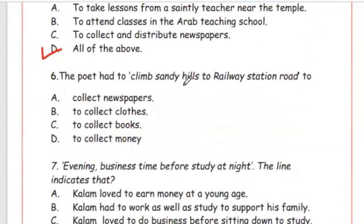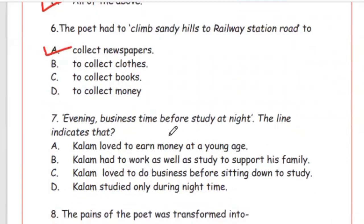Question 6: The poet had to climb sandy hills to the railway station road. Why? Options: to collect newspapers, laws, books, or money. The right answer is Option A, to collect newspapers. Question 7: 'Evening business time before study at night' — this line indicates Option B, that Kalam had to work as well as study to support his family.